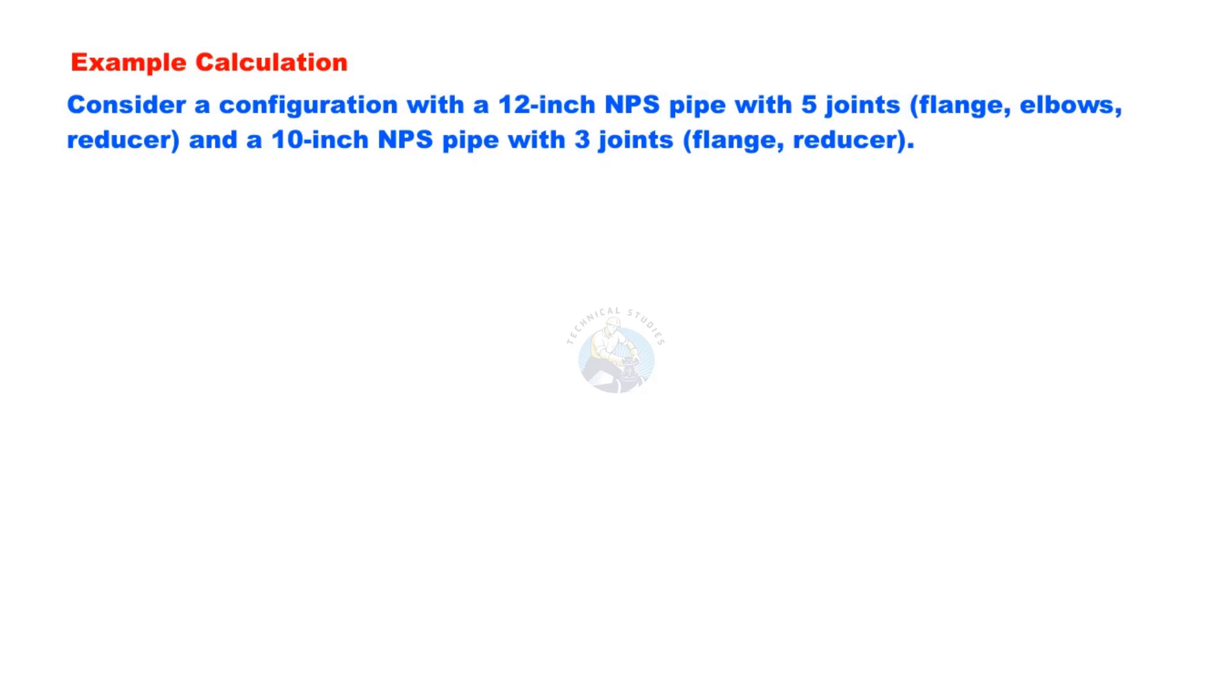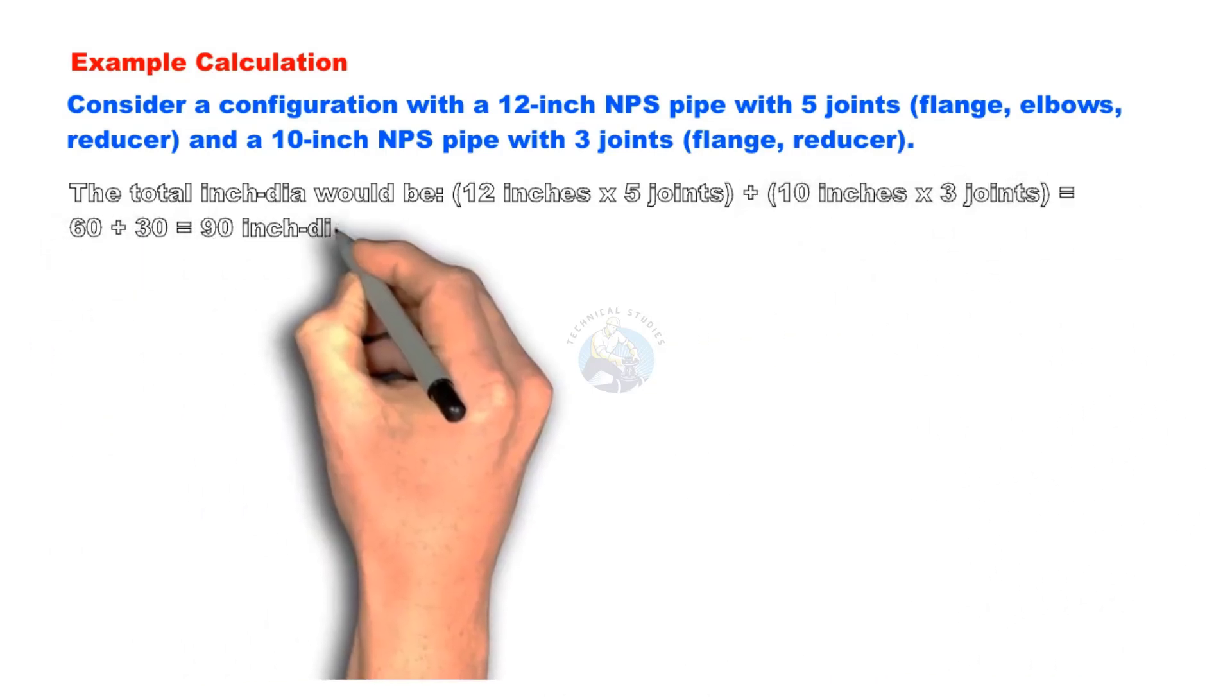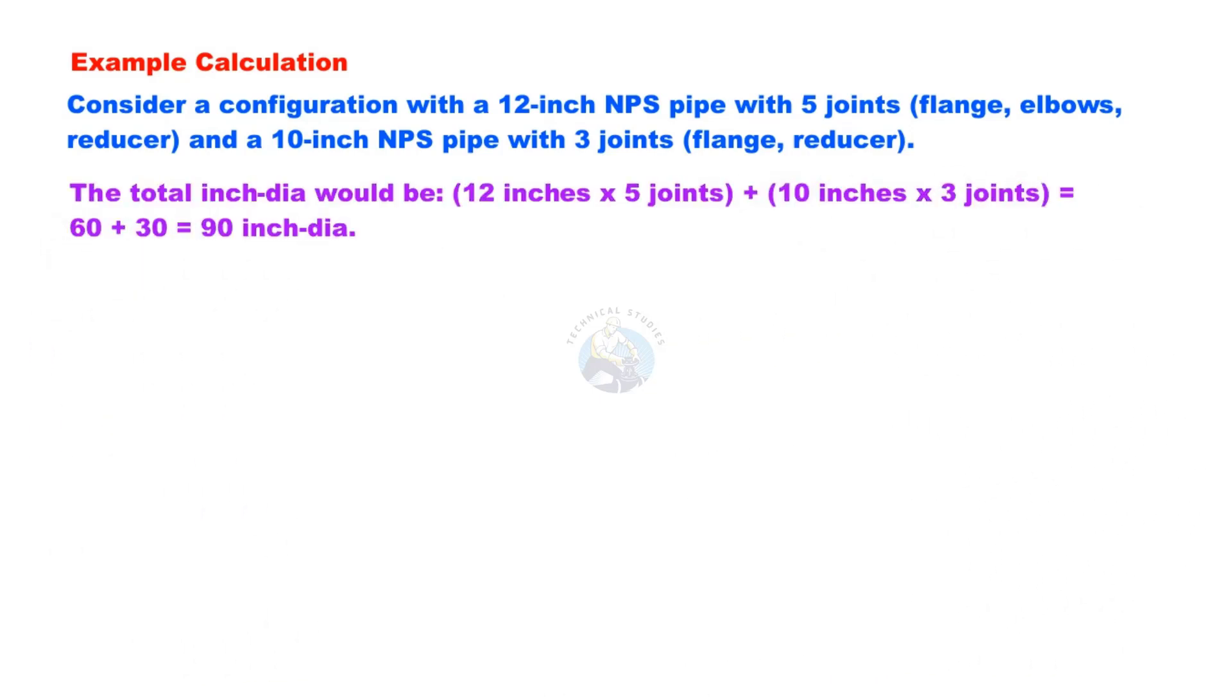Consider a configuration with a 12-inch NPS pipe with 5 joints (flange, elbows, reducer) and a 10-inch NPS pipe with 3 joints (flange, reducer). The total inch-dia would be 12 inches multiplied by 5 joints plus 10 inches multiplied by 3 joints, equals 60 plus 30, equal to 90 inch-dia.